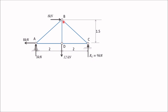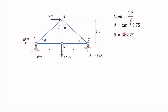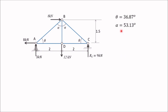In this truss, triangles BDC and BDA are congruent: BD is common to both, DC equals DA at 2 meters each, and both have a right angle. So if one angle is theta, the corresponding angle in the other triangle is also theta. Using the right angle triangle with sides 1.5 and 2, tan theta equals 1.5 divided by 2, giving theta equal to 36.87 degrees. Therefore alpha equals 90 minus theta, which is 53.13 degrees.